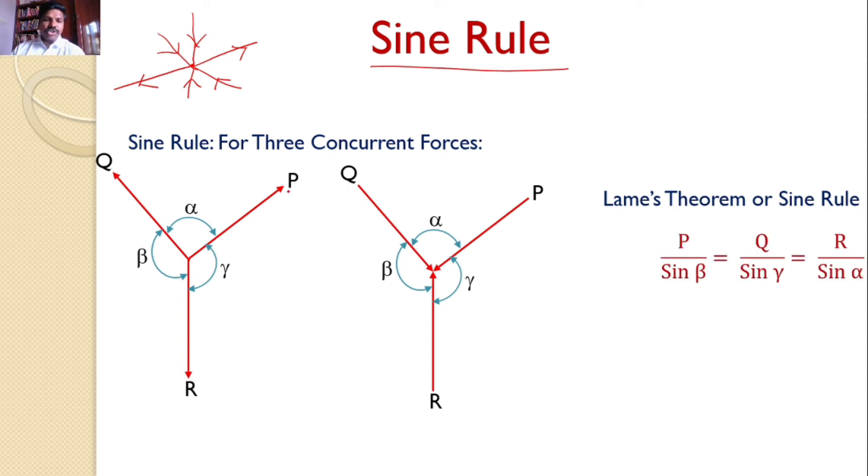According to that, the force P divided by sine of the angle between other two forces, Q and R is constant. That means, P by sine beta is constant.